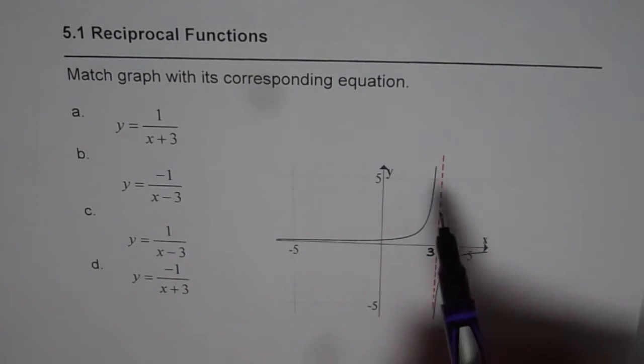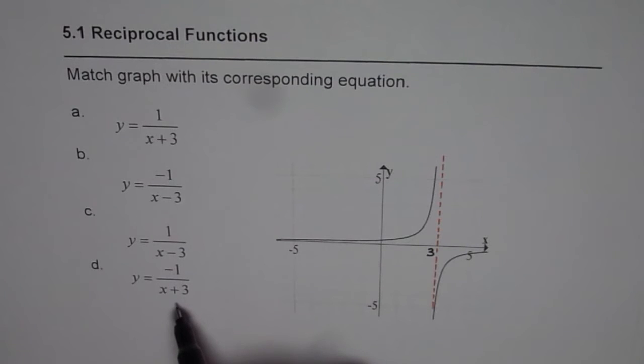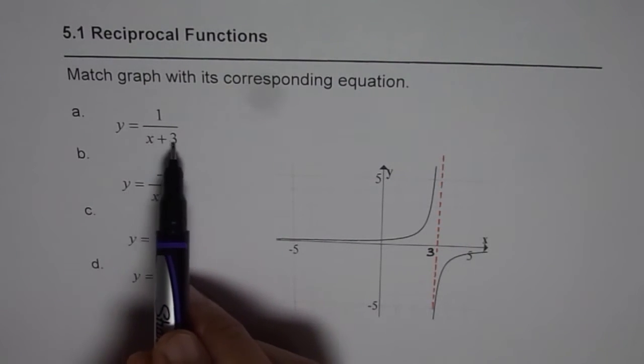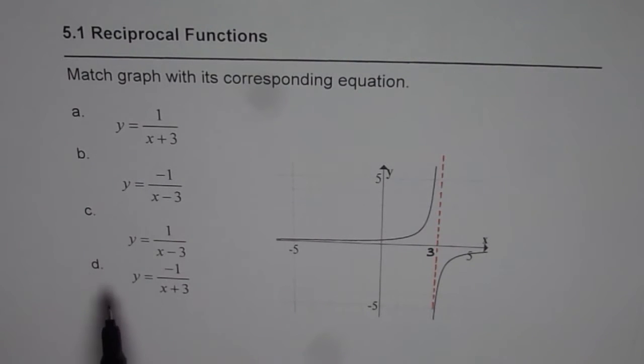Now first step should be we have vertical asymptote at x equals to 3. That means denominator of our function should be 0 for x equals to 3. So if I put 3 here I get 6, so that is not the option, but if I put 3 here I do get 3 minus 3 as 0.